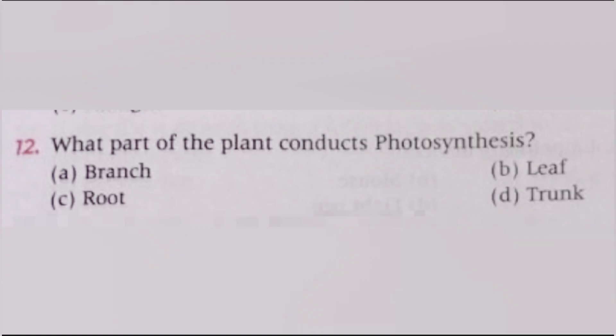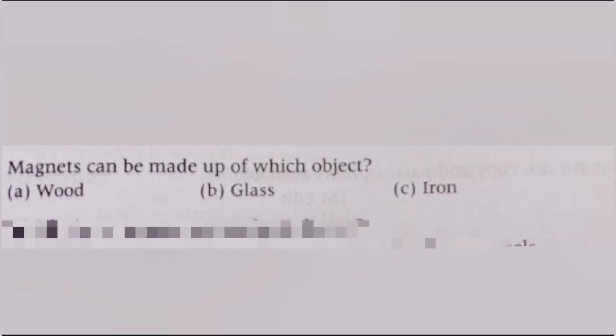Next, dark rain clouds can give out lightning and thunder, snow, sunlight, or wind. The answer is A, thunder. Next, what part of the plant conducts photosynthesis? Branch, leaf, root, trunk. The answer is B, leaf. Next, a magnet can be made of which object? Wood, glass, iron, plastic. The answer is C, iron.